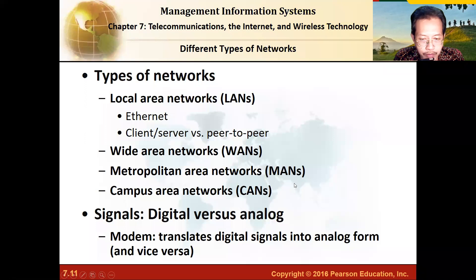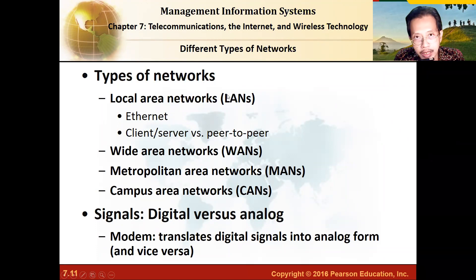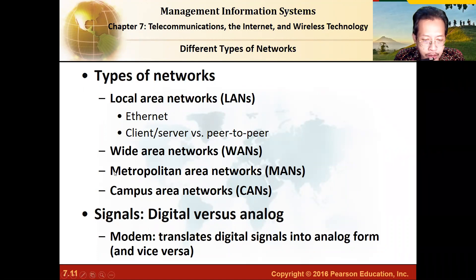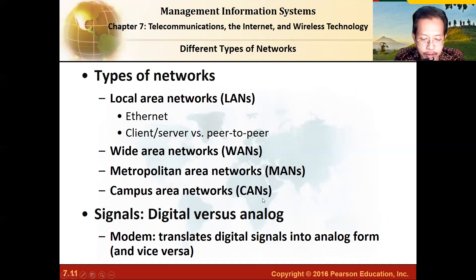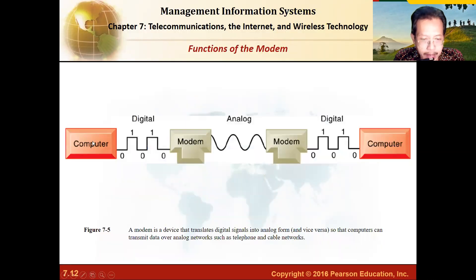We also have several types of networks. You have LAN, or local area network, when it's basically in one area. If it's a wider area, we call it WAN, or wide area network. If it's a wider area but rather limited, you can call it a campus area network, for instance. Next would be about signals: digital signals versus analog signals.